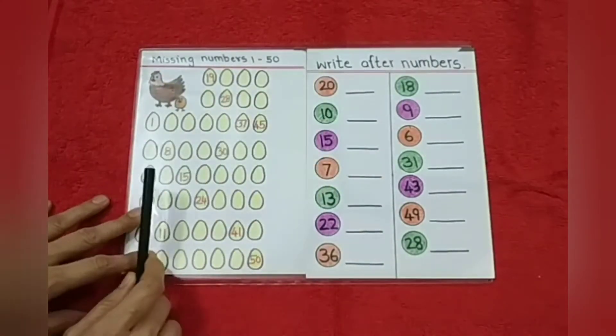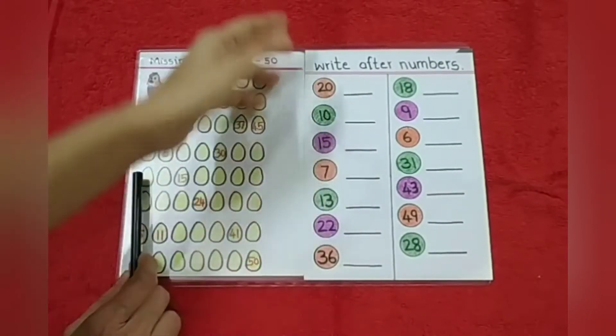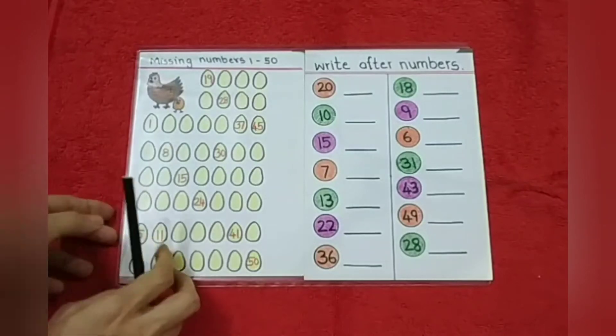After that, write after numbers. So after 20, 21 will come. After 10, 11 will come. That way they can finish this page. After that, we'll go to the next part.